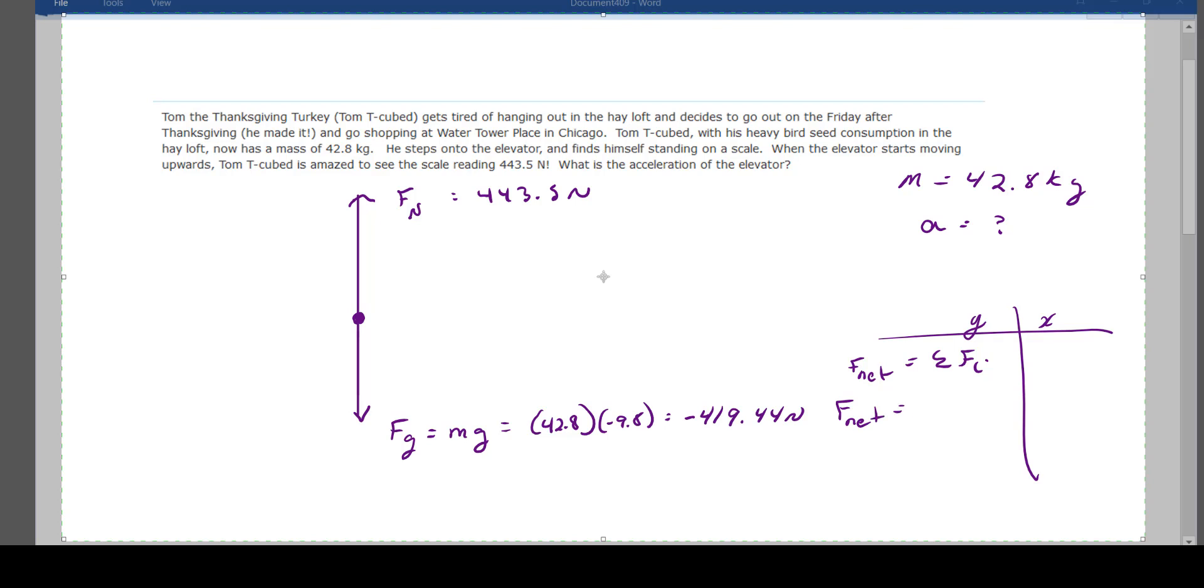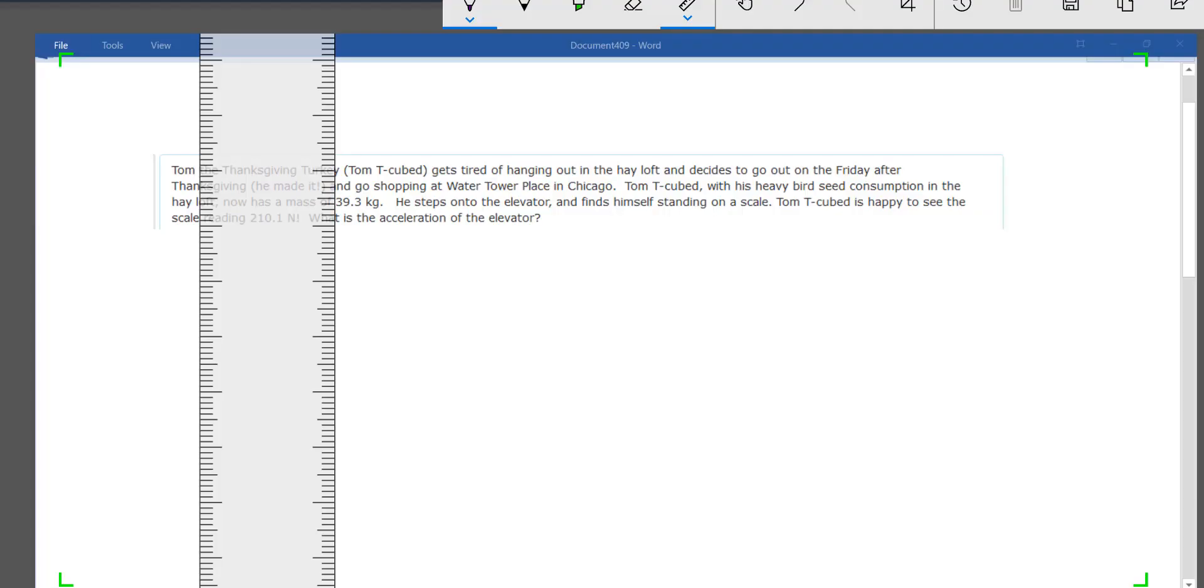On the y side, F net is equal to Fn plus F sub g. So now I'm going to calculate my net forces by plugging in my numbers. F net is equal to 443.5 newtons minus 419.44 newtons, or F net equals 24.06 newtons. So now I'm going to use F net equals ma to find the acceleration. I plug in the mass of Tom cubed, and I get the acceleration of 0.562 meters per second squared.